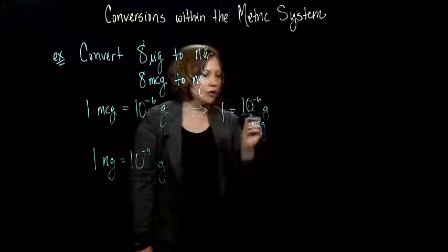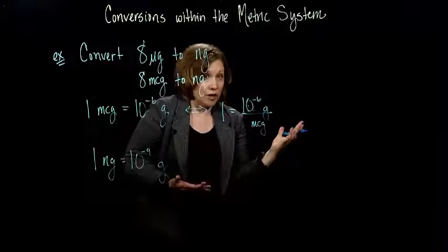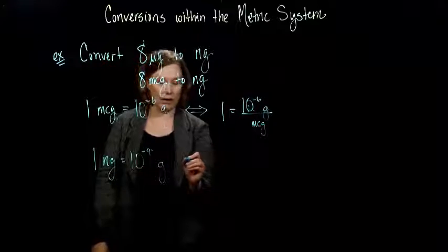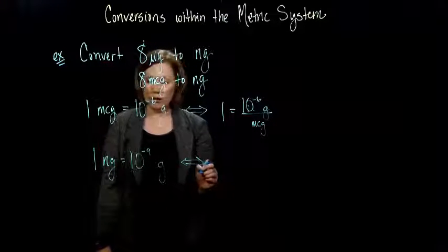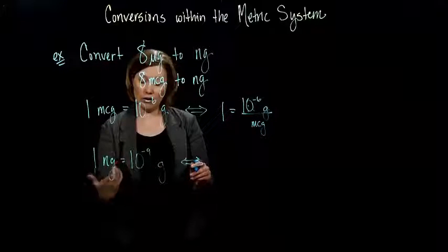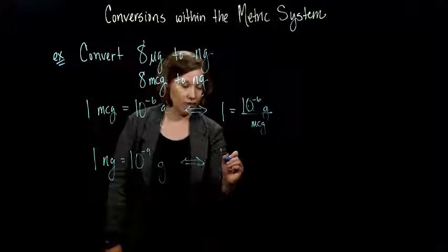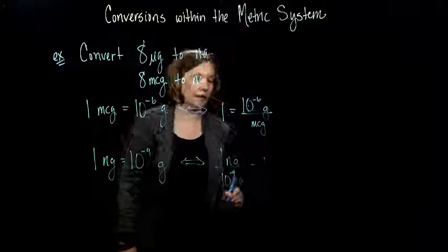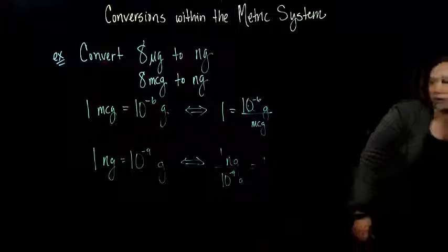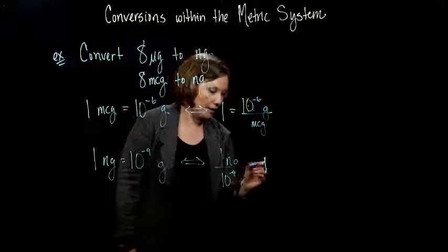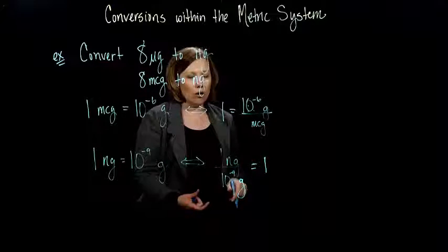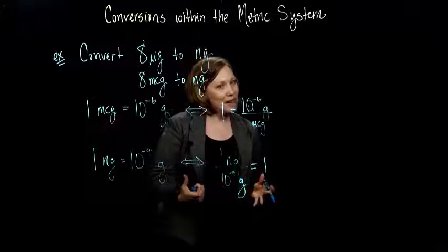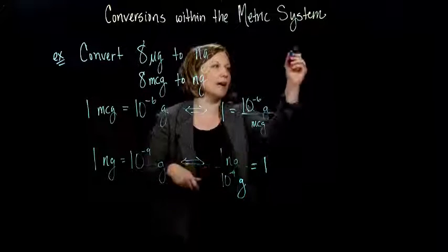We can think about 10 to the negative 6 grams per microgram. Either way that you think about it, they're both the same. You can leave the 1 here. 1 times anything is itself. So you can leave the 1 or you don't need it. How is that helpful to us? Well, we could play the same game over here. We could divide both sides by 1 or by 10 to the negative 9 grams. What can you always do in math? We could always multiply by 1 and not change what we actually have.